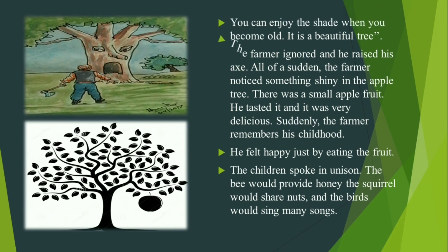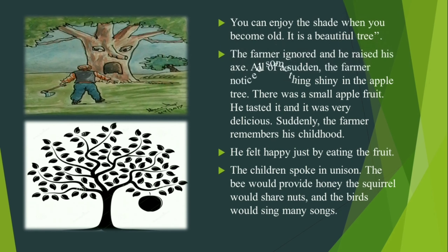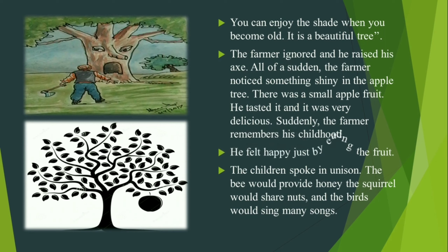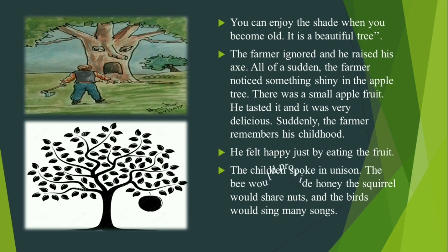The farmer ignored them and raised his axe. All of a sudden, the farmer noticed something shiny in the apple tree. There was a small apple fruit. He tasted it and it was very delicious. Suddenly, the farmer remembered his childhood. He felt happy just by eating the fruit. The children spoke in unison — the bee would provide honey, the squirrel would share nuts and the birds would sing many songs.